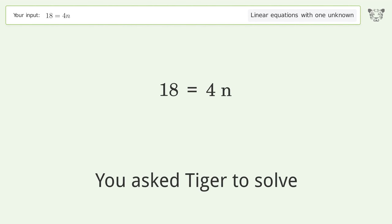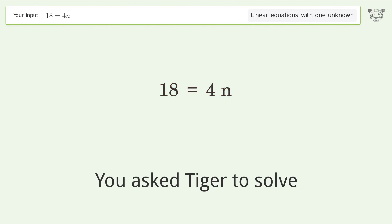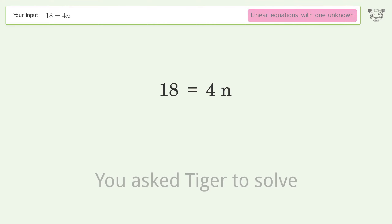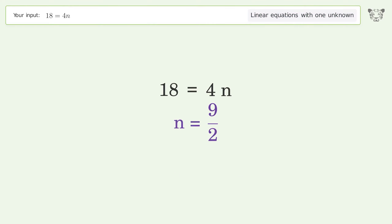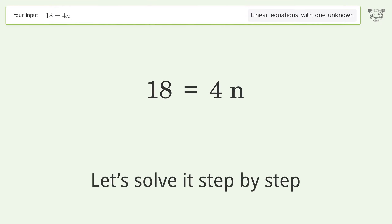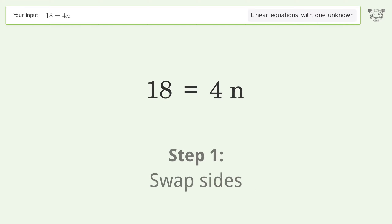Tiger is asked to solve a linear equation with one unknown. The final result is n equals 9 over 2. Let's solve it step by step — swap sides.